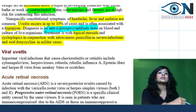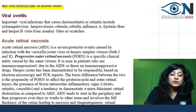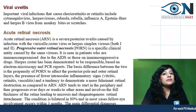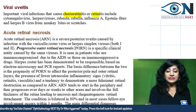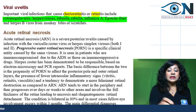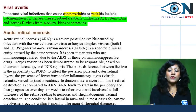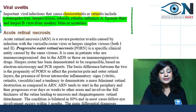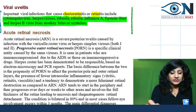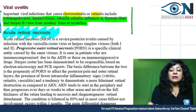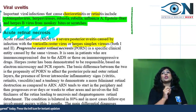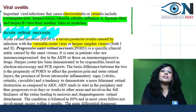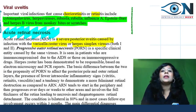Viral uveitis — certain important viral infections can cause chorioretinitis or retinitis: CMV, herpes, rubella, influenza, Epstein-Barr virus, and herpes B from monkey bites or scratches. Acute retinal necrosis (ARN) is a severe posterior uveitis caused by varicella zoster virus or herpes simplex virus types 1 and 2.